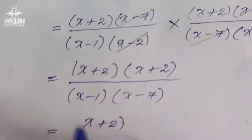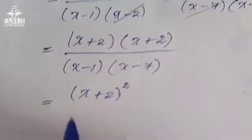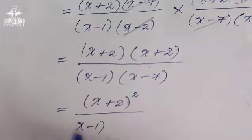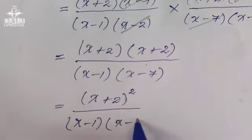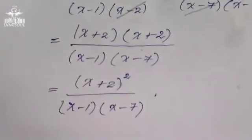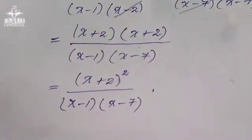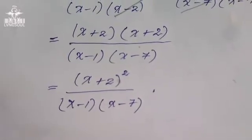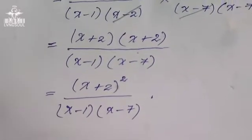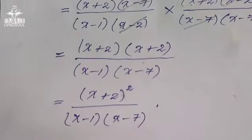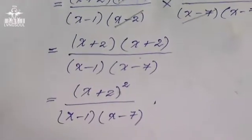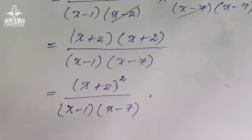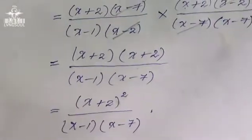Multiply: x minus 7 into x minus 7, and x plus 2 into x plus 2, then x minus 1 into x minus 7. So x plus 2 is a perfect square. We can do this simplification. What are the rules? Numbers 12, 13, 14, 15, 16, 17.